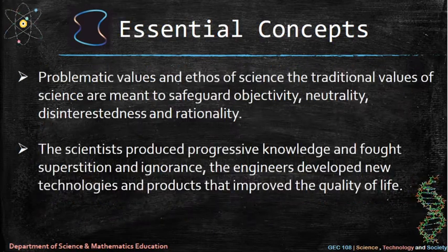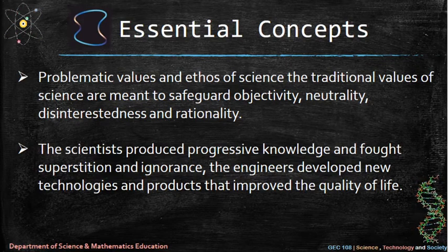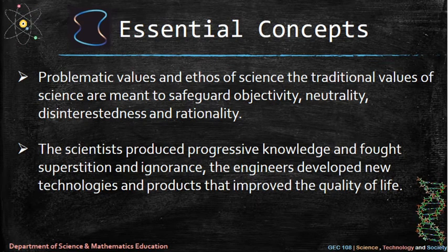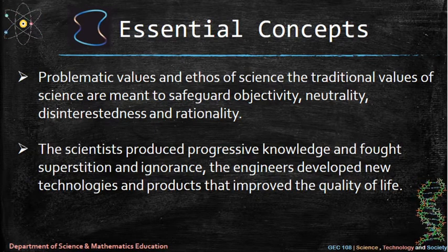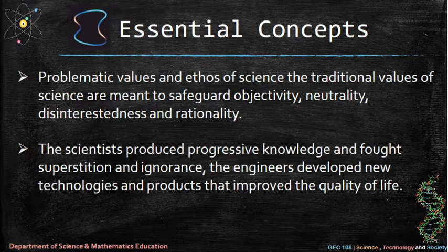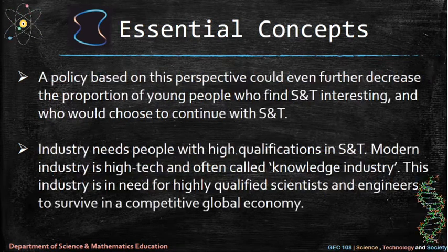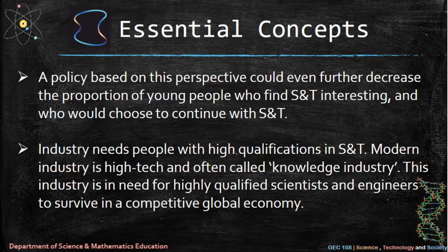Three: problematic values and ethos of science. The traditional values of science are meant to safeguard objectivity, neutrality, disinterestedness, and rationality. Four: scientists produced progressive knowledge and fought superstition and ignorance, while engineers developed new technologies and products that improved the quality of life. Five: policies based on this perspective could further decrease the proportion of young people who find science and technology interesting and who would choose to continue with it.